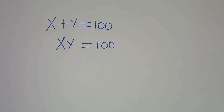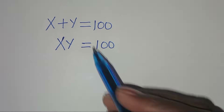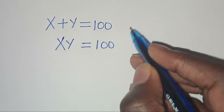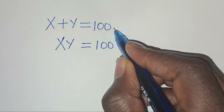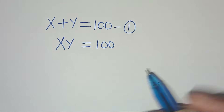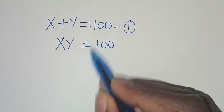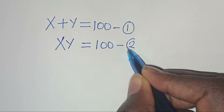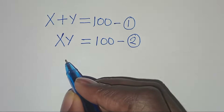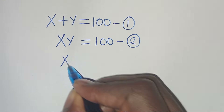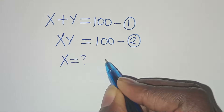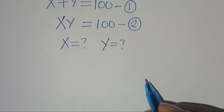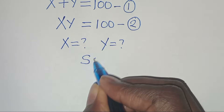Hello everyone, welcome. We will solve this algebra problem: x plus y equals 100 — let's call this equation 1 — and x times y equals 100 — let's call this equation 2. What is the value of x and what is the value of y? Now let's provide a solution.